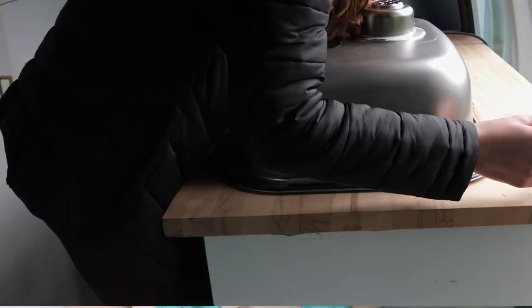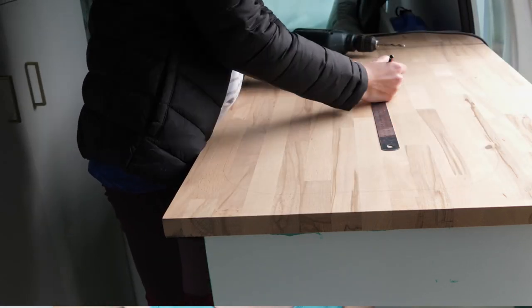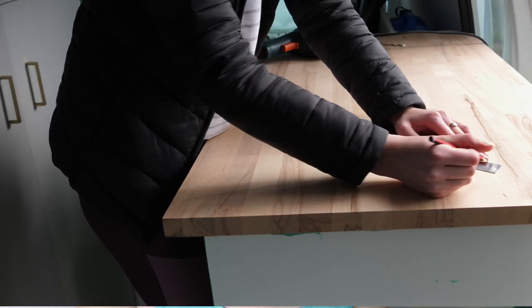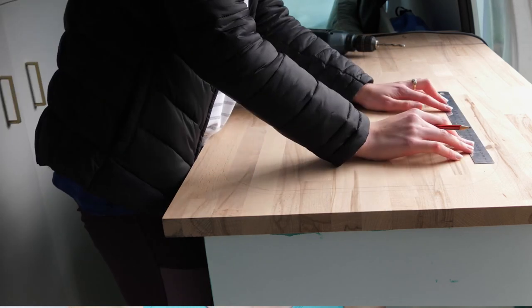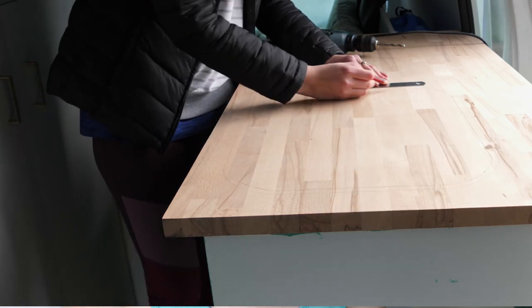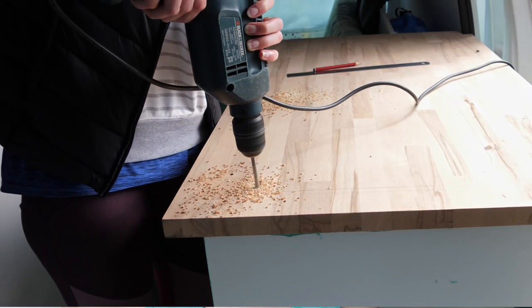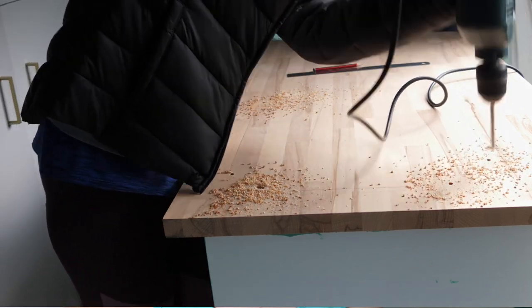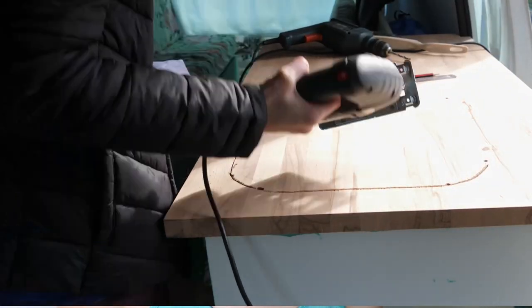In my previous video I installed my benchtops and my sink is going to be installed in the far end of my fixed benchtop. I started by tracing around the sink and then I measured one centimeter in, drew a line running parallel to my outline, and then used a drill to make some holes in the benchtop large enough that I could fit my jigsaw in. Then I used my jigsaw to cut out the hole for the sink.